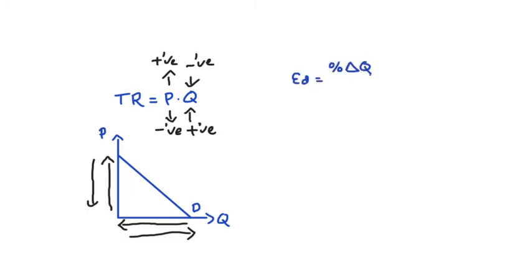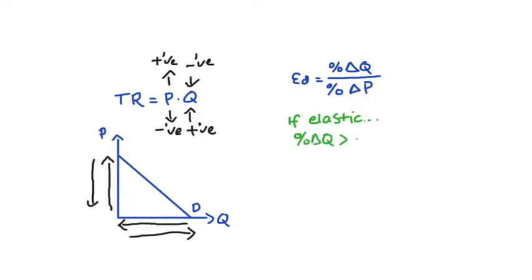Formally, our elasticity of demand is the percentage change in quantity divided by the percentage change in price. We call demand elastic if, for some price change, the percentage change in quantity is larger than the percentage change in price — so price moves a little and quantity reacts proportionately more. In terms of numbers, our elasticity in absolute value will be greater than one, since the numerator in absolute value is larger than the denominator.